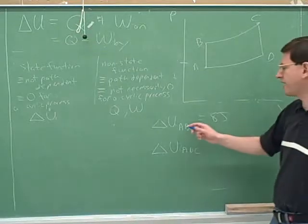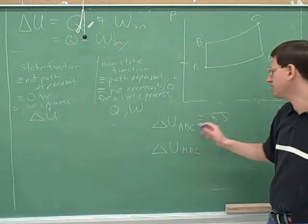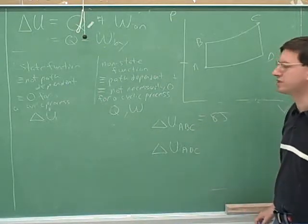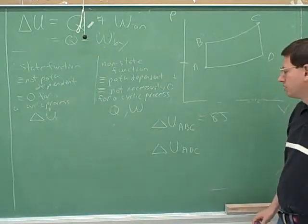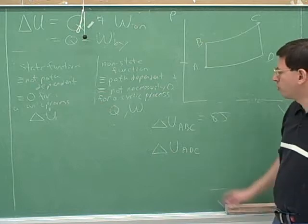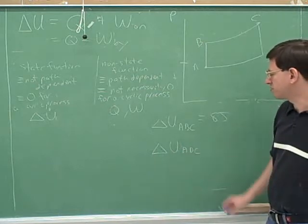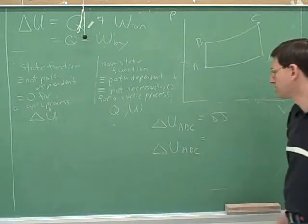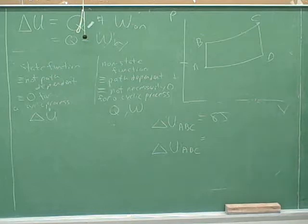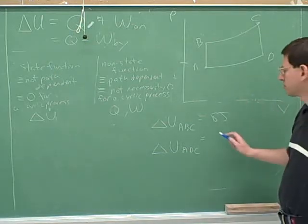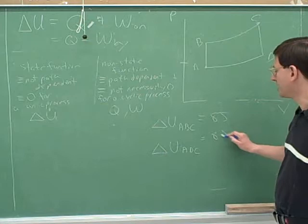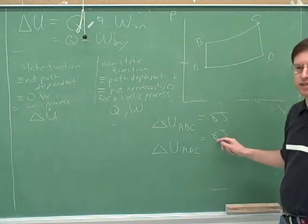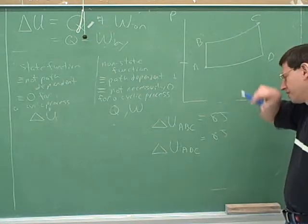So let's say that the delta U from A to B to C is 8 joules. What would be the delta U from A to D to C? Not negative 8 joules, but just 8 joules.